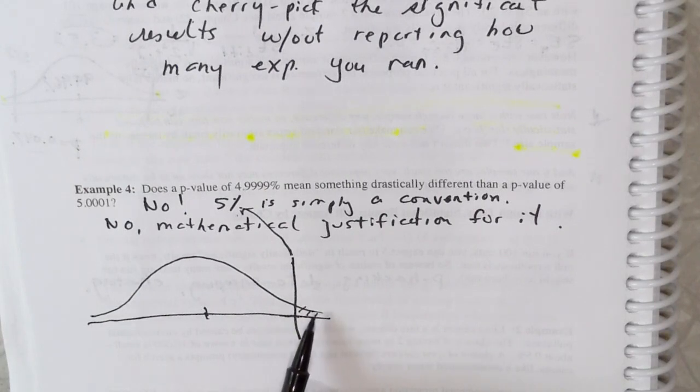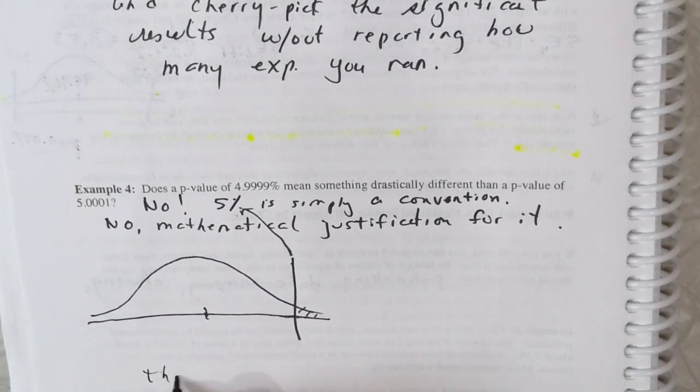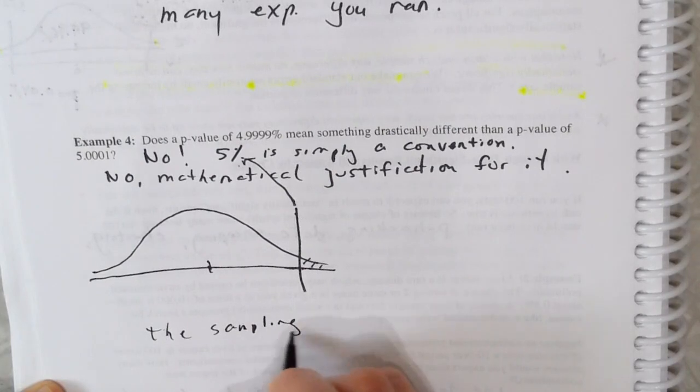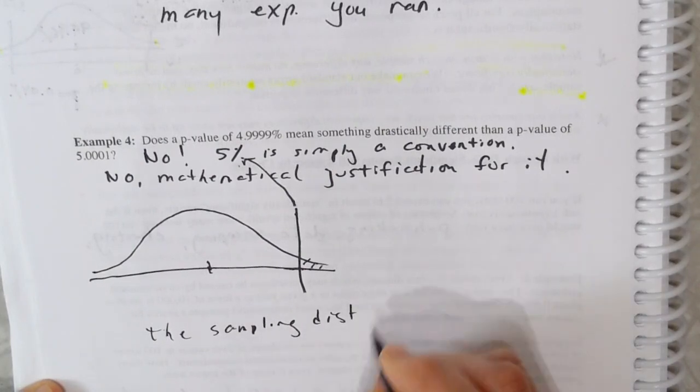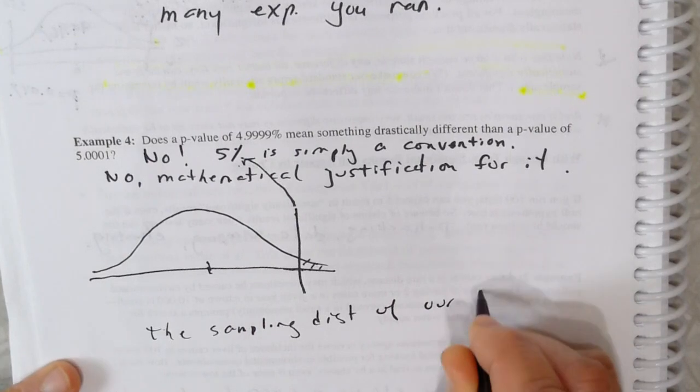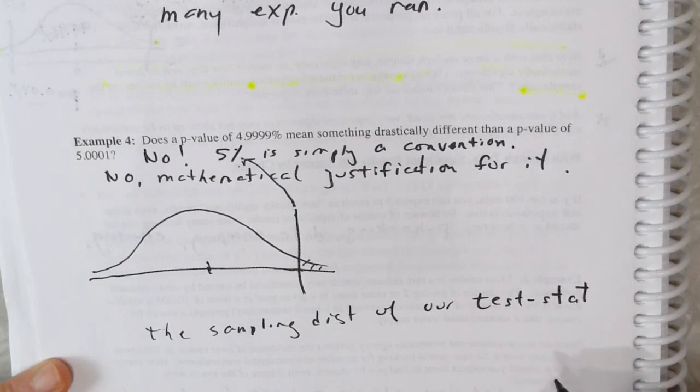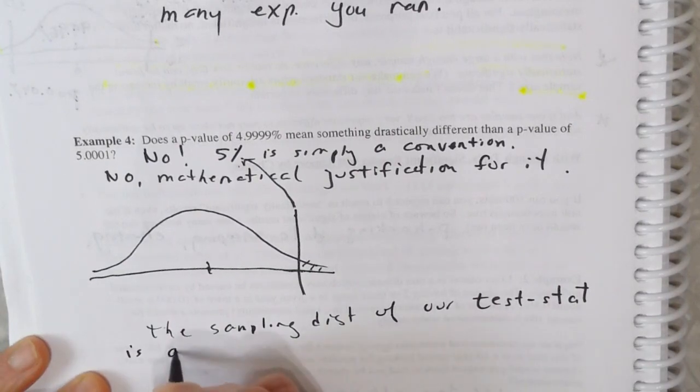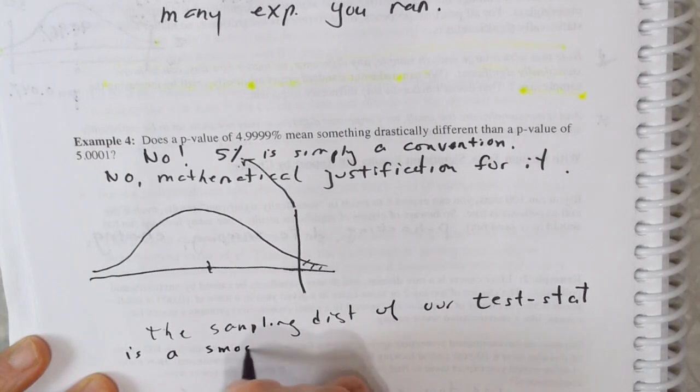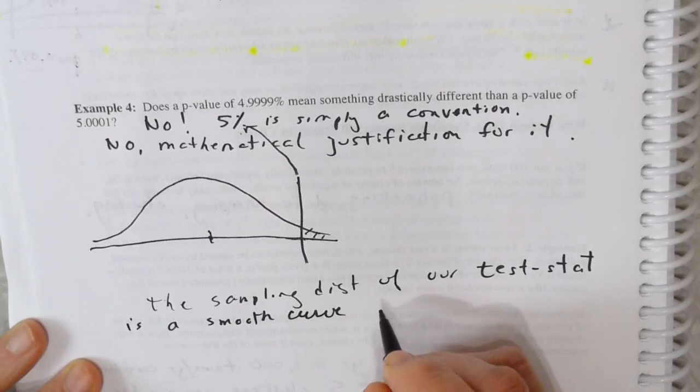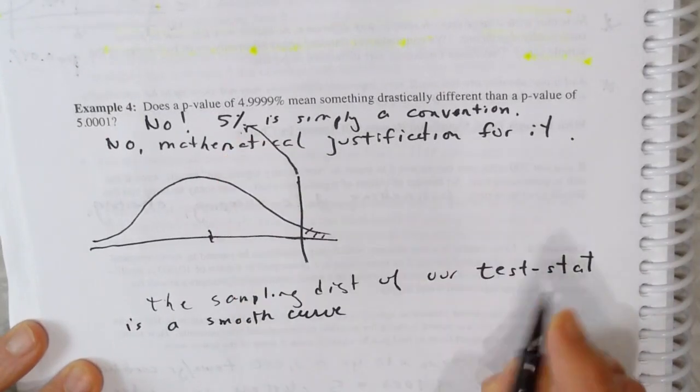The sampling distribution of our test statistic does not drop off. It's not a curve. Think of the sampling distribution. This is what this is. The sampling distribution of our test statistics, if it's a z or a t or a chi square, is a smooth curve. It doesn't have a sharp dropping off point to justify any particular cutoff.